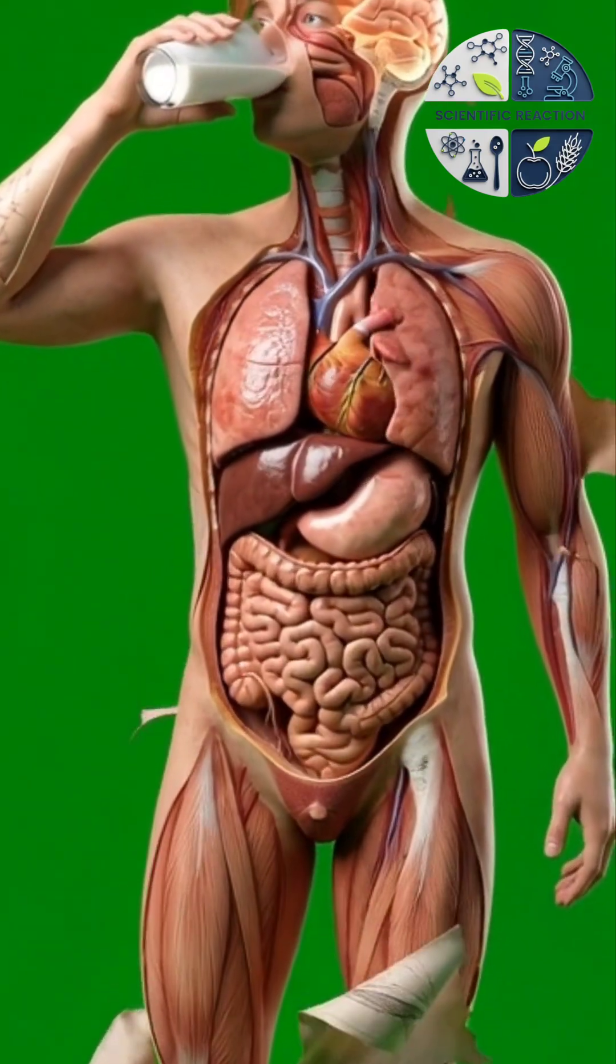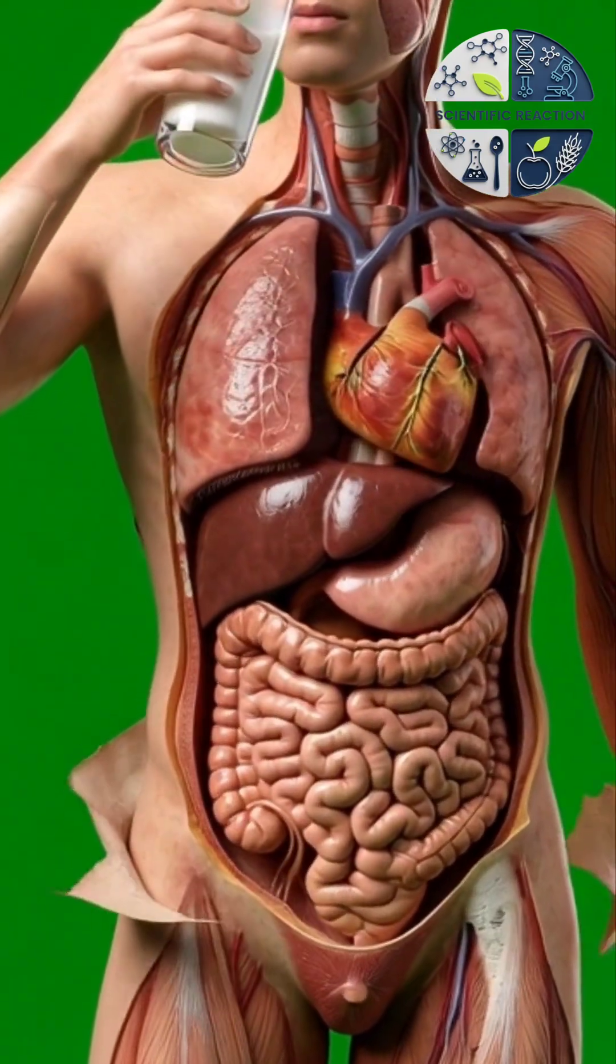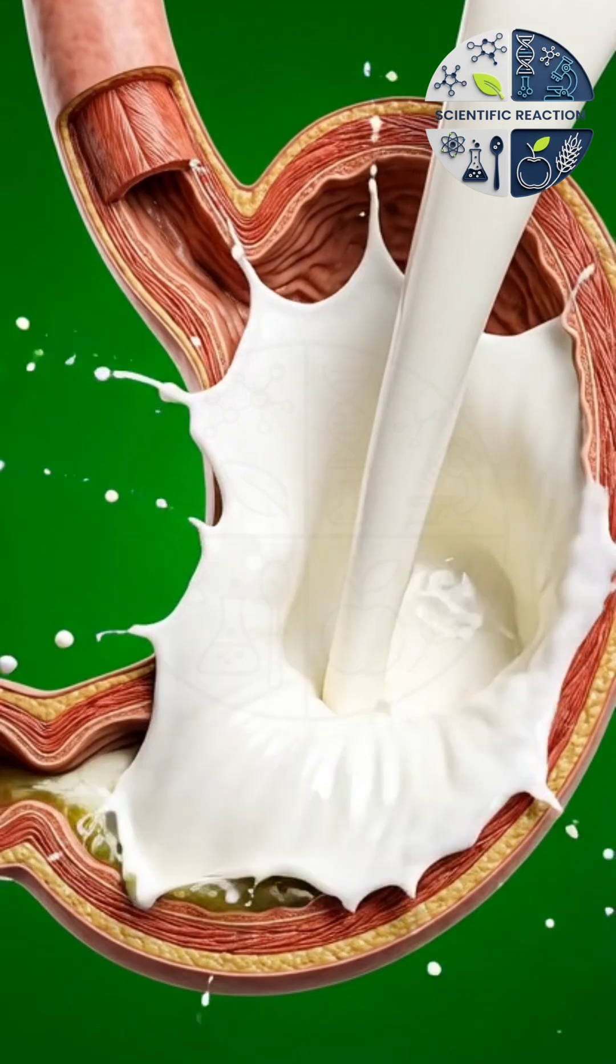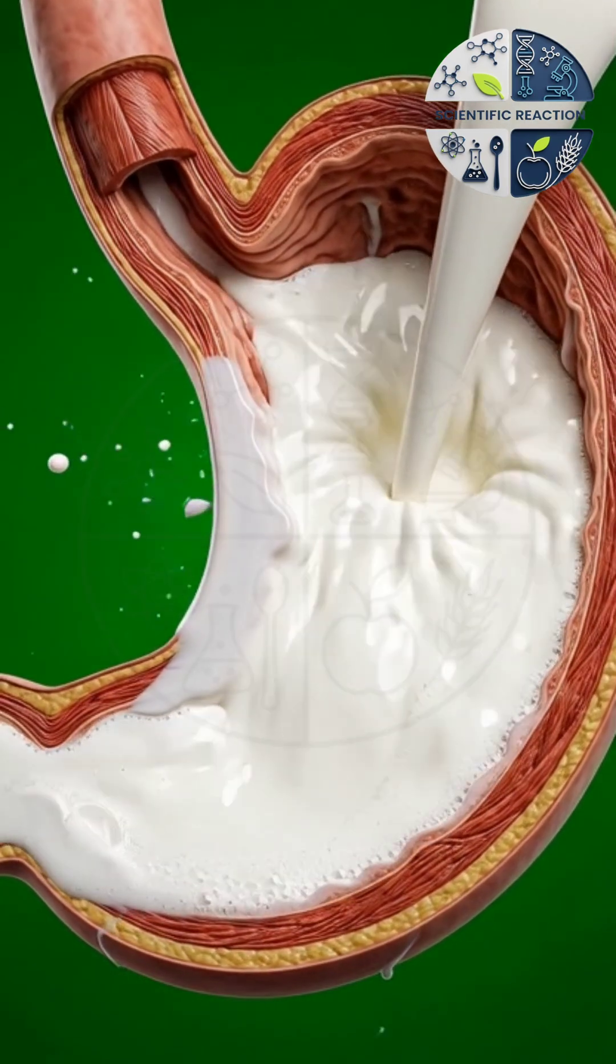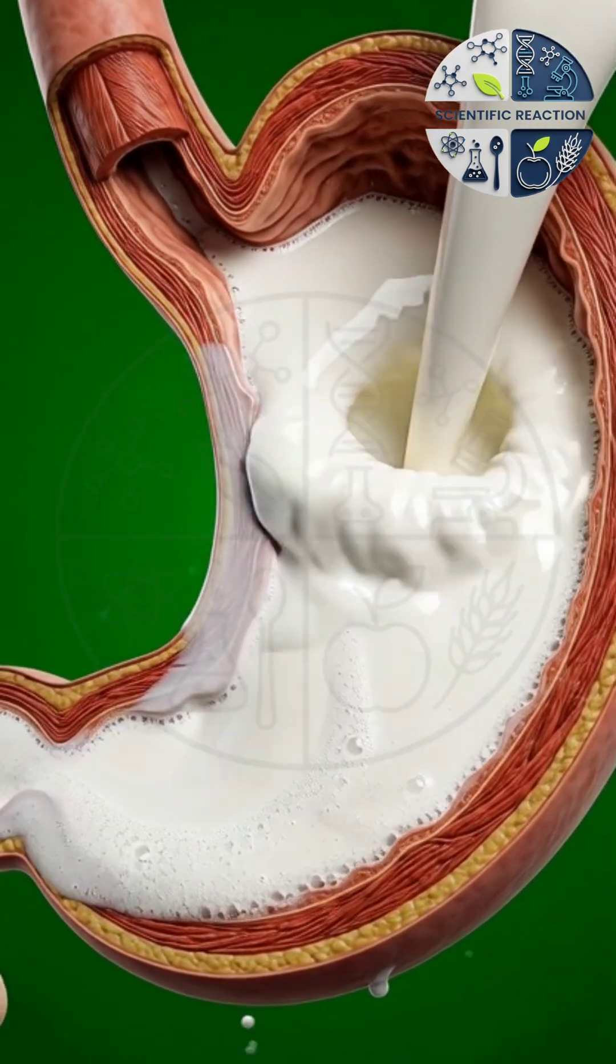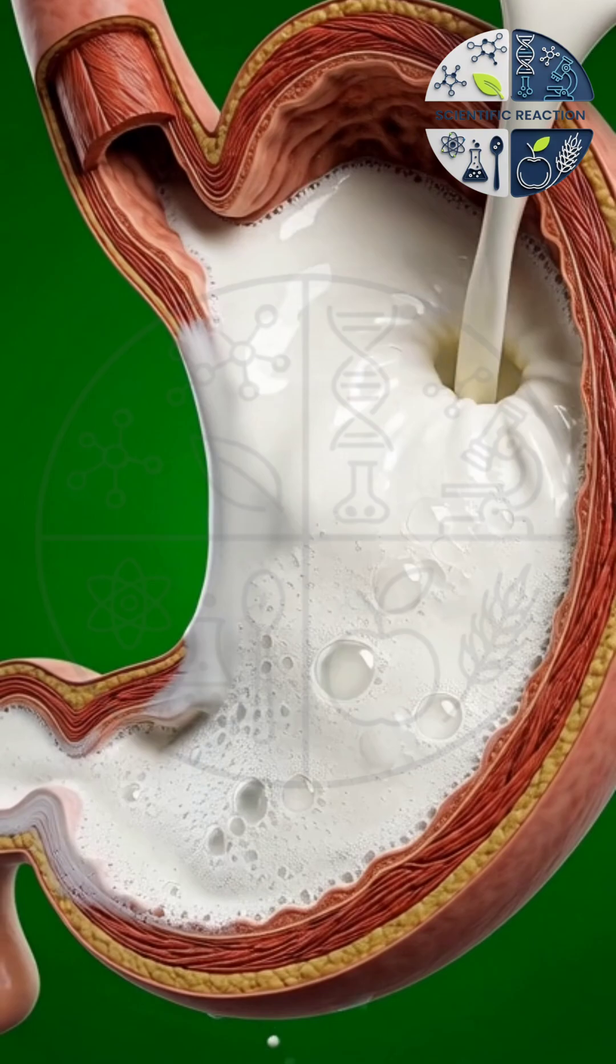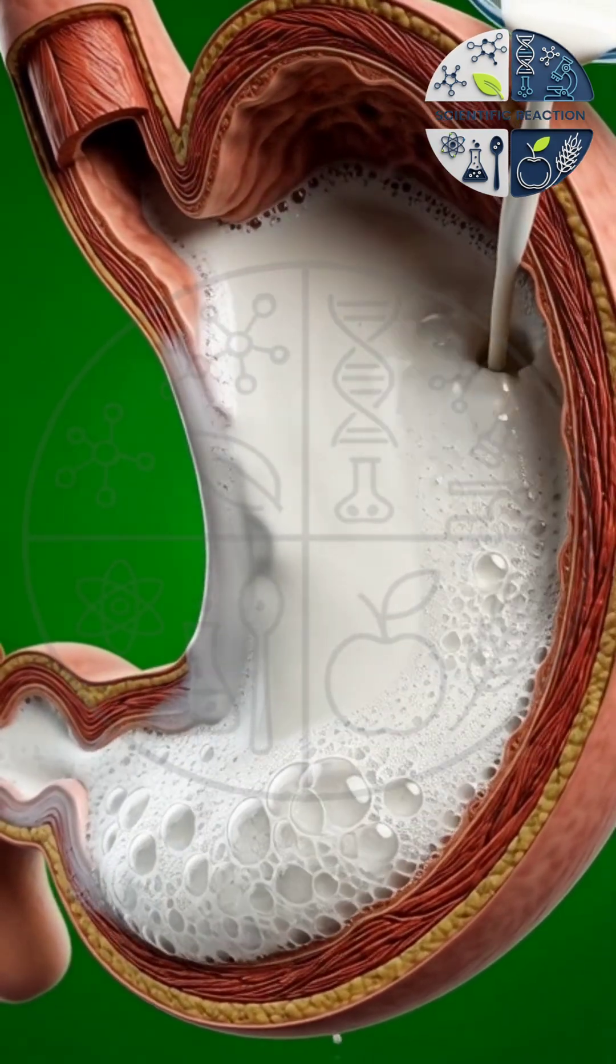A simple sip of milk begins a surprisingly complex journey inside the human body. As the milk enters the stomach, powerful digestive acids quickly break it apart, separating proteins, fats, vitamins and minerals.